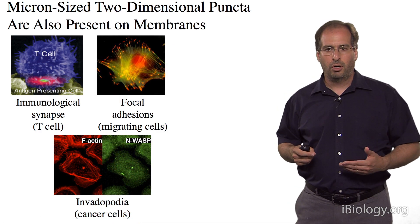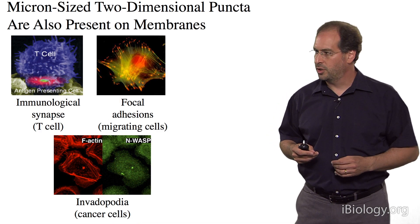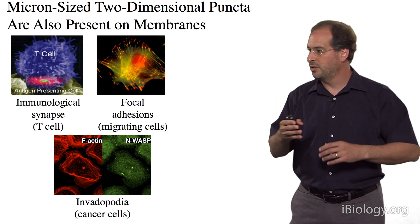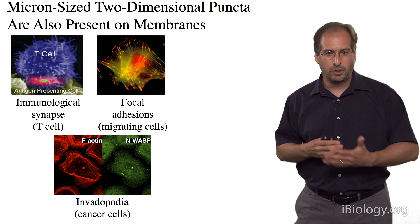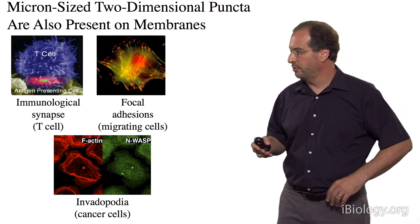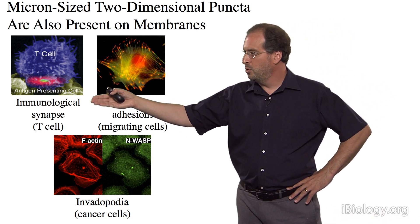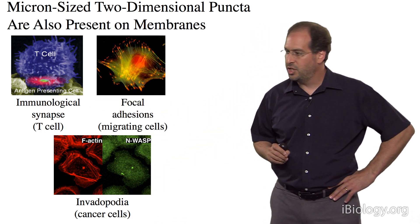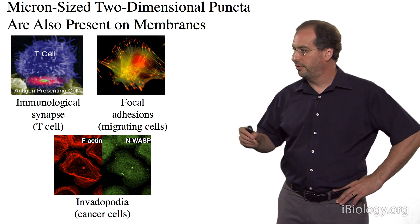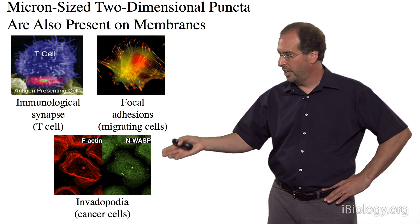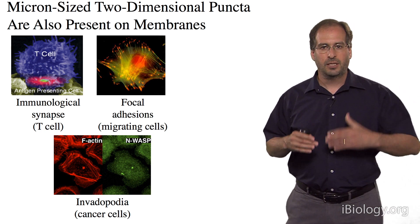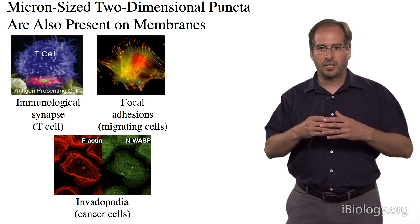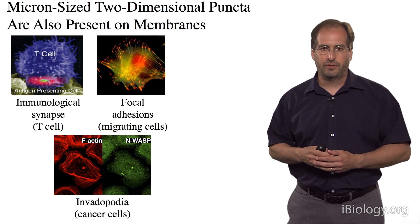There are also a number of potentially analogous structures that are two-dimensional — that is, clusters of proteins on membranes — and those are important in very large swaths of biology. These include the immunological synapse, focal adhesions, and invadipodial structures, which are involved in T cell activation, cell migration, and tumor metastasis. Like the three-dimensional equivalents, we know very little about the nature of these structures and their functions in cells.